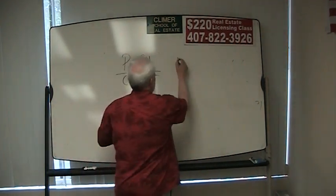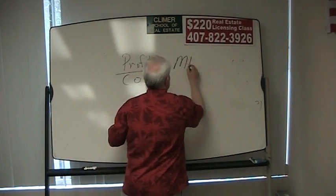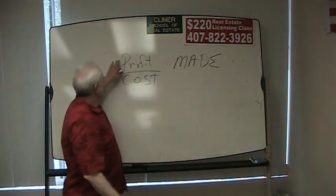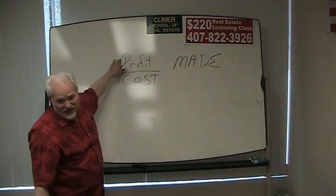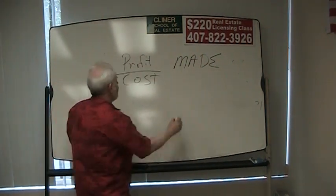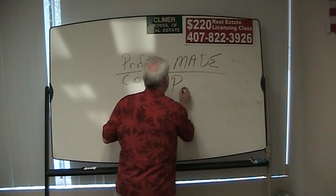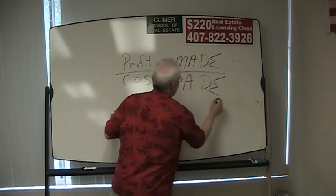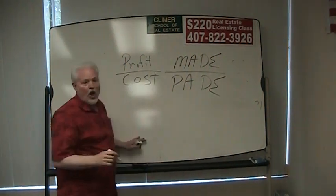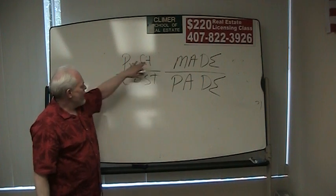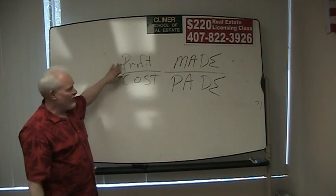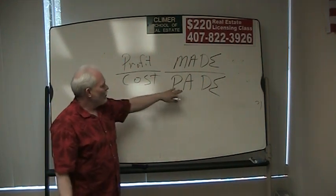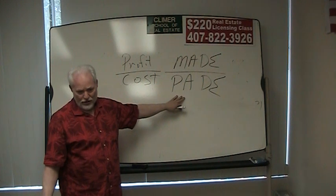She said it's what you made — which is another word for profit — over what you paid — which is another word for cost. So: what you made (profit) divided by what you paid (cost).